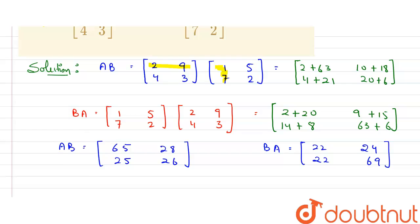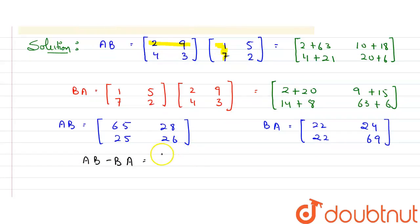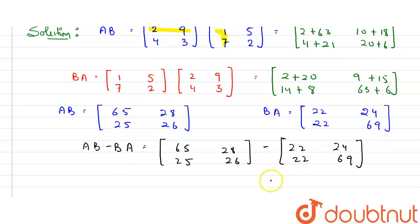We need to calculate AB minus BA. So let's write here, AB minus BA. This value we have to calculate. So put the values here. AB we have got, that is 65, 25, then 28, then 26. Minus BA matrix is 22, 22, 24, 69. Let's solve these two and we'll get the final answer.